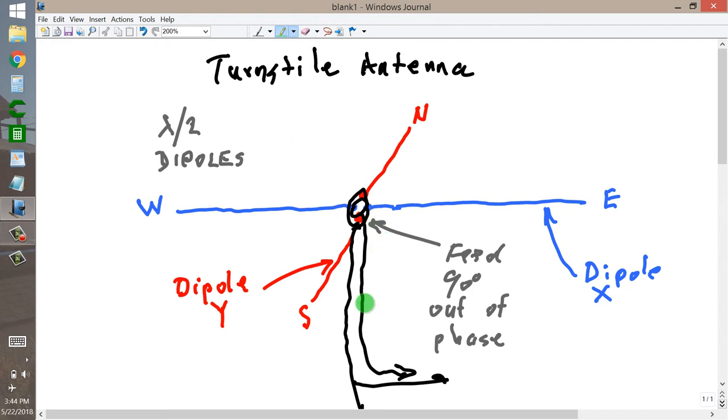Say, you might want to design one for 40 meters. Now, what kind of a horizontally polarized radiation pattern are you going to get when you do that?